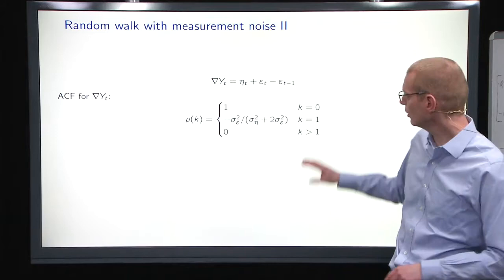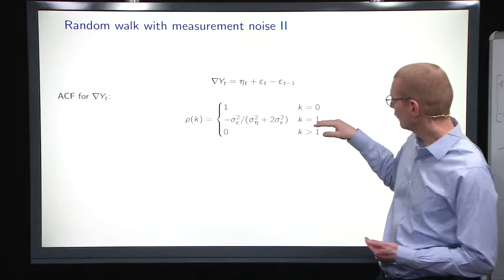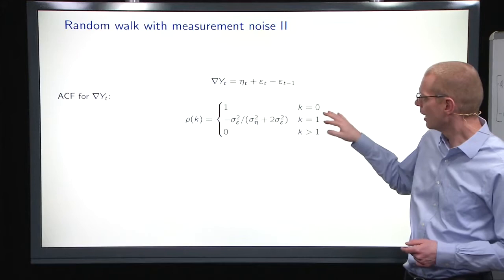Now, when we look at this process, one thing we can do to identify the order is to look at the autocorrelation function for this, defined to be 1 for lag 0, and for lag 1, there is a dependence coming from this εt minus 1 here.